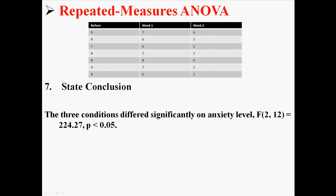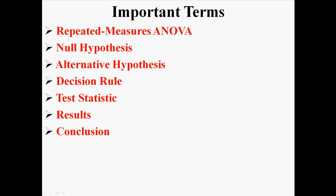Our conclusion, what this actually means, is that the three conditions differed significantly on anxiety level. When F(2,12) equals 224.27, p less than 0.05. That's the official way of writing it. What this basically means is that there is a difference between these three groups. We don't know specifically where that difference is. We would do post-hoc tests to find that, but we do know that there is a difference somewhere between before, week one, and week two. And that is a repeated measures ANOVA.